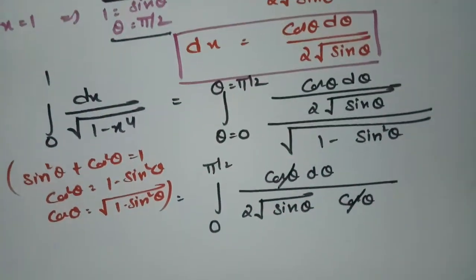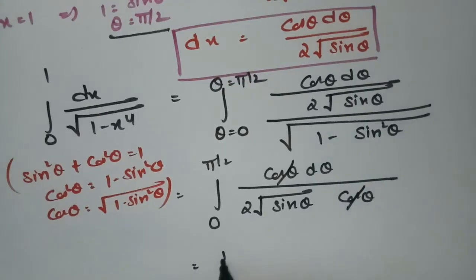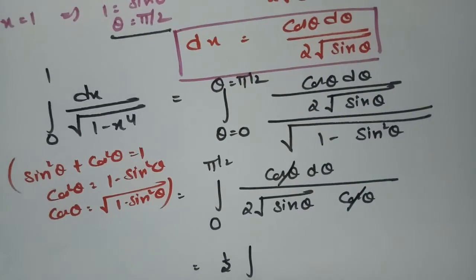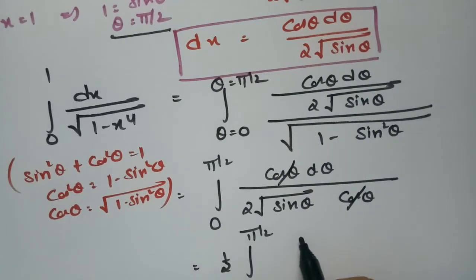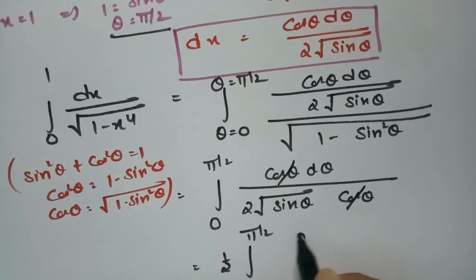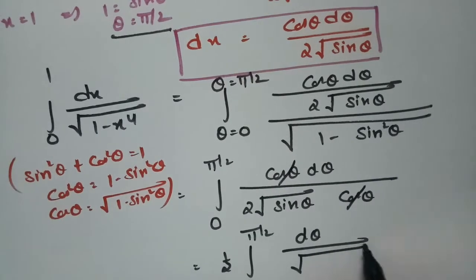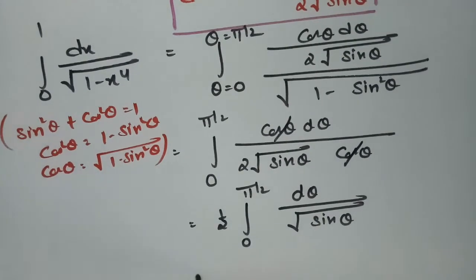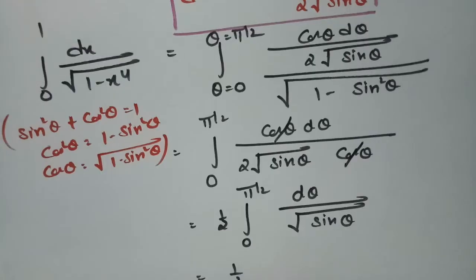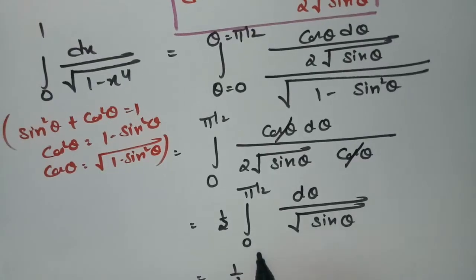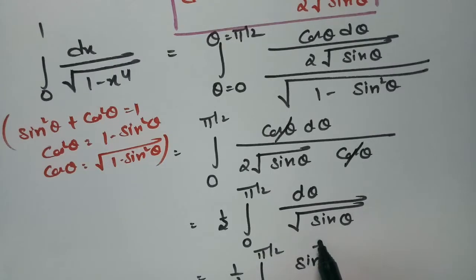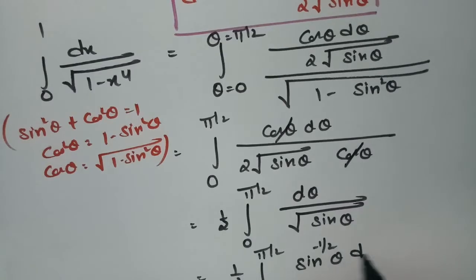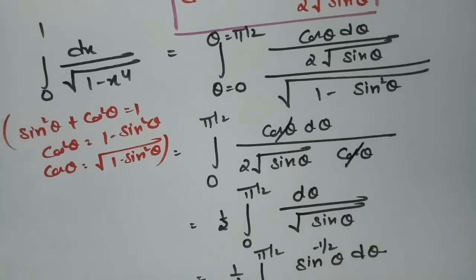We can cancel cos θ in the numerator and denominator. The integral simplifies to one-half times the integral from 0 to π/2 of sin^(−1/2) θ dθ, which can be written as (1/2) ∫₀^(π/2) sin^(−1/2) θ dθ.